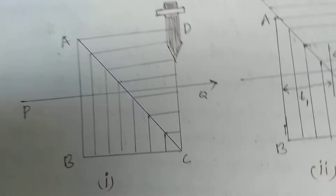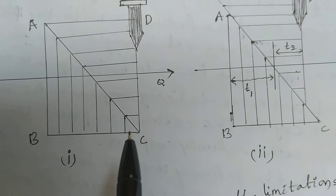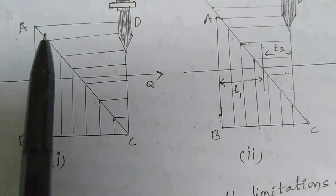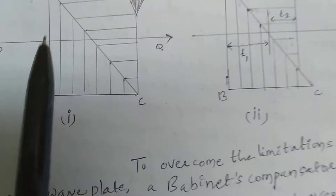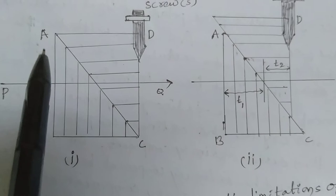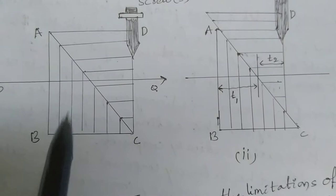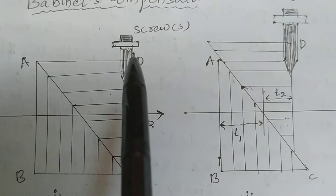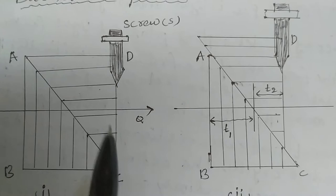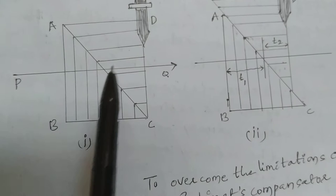A Babinet compensator consists of two small wedge-shaped pieces of quartz with their hypotenuses in contact to form a small rectangular block. In the figure, this is the first wedge and this is the second wedge. In the first wedge, the vertical lines indicate the optic axis, which is parallel to the first refracting surface. In the second wedge, the horizontal lines represent the optic axis, which is perpendicular to the second refracting surface.